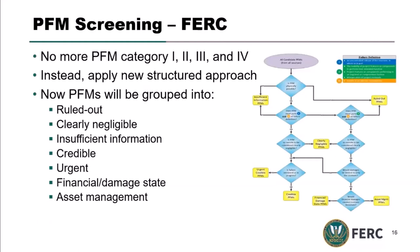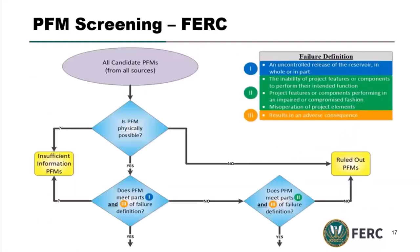In more detail, the structured screening approach works like this: for each failure mode on your list — you might have five, ten, or hundreds — you start systematically and ask: is this failure mode physically possible? If it is, does it meet parts one and three of our definition of failure — specifically an uncontrolled release, which is the traditional approach most are familiar with — and is there some consequence? If so, you proceed down that column. If there is no loss of reservoir but it does meet part two — the operational or 'damage state' aspect — you proceed down the next column.